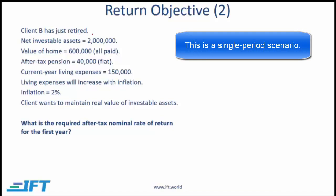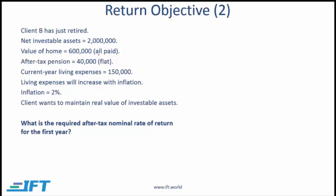Client B has just retired. Net investable assets are $2 million. The client owns a home valued at $600,000, fully paid off. There is an after-tax pension of $40,000 per year (flat, not increasing). Current living expenses are $150,000, which will increase with inflation at 2%. The client wants to maintain the real value of investable assets. What is the required after-tax nominal rate of return for the first year?